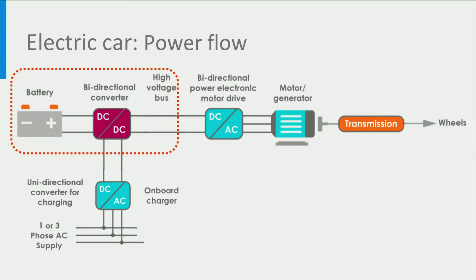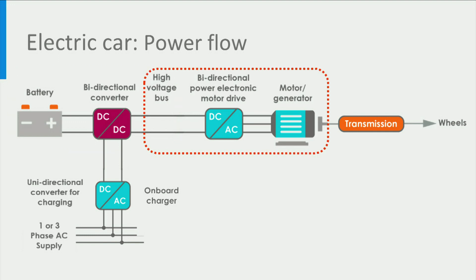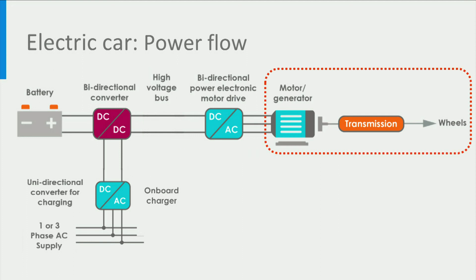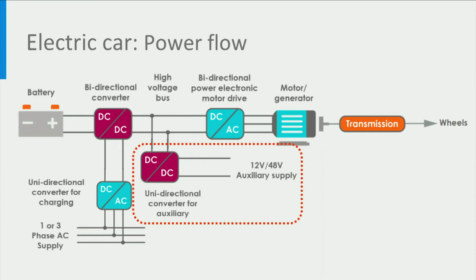When the car is in driving mode, the power provided by the battery goes through the DC-to-DC converter to the high-voltage DC bus. Then the DC-to-AC inverter of the motor drive sends the power to the motor. The motor then converts the electrical energy to mechanical energy and it is sent to the wheels via the transmission. Further, a DC-to-DC unidirectional converter steps down the voltage from the high-voltage DC bus to charge the auxiliary battery, which in turn powers the electric vehicle accessories.